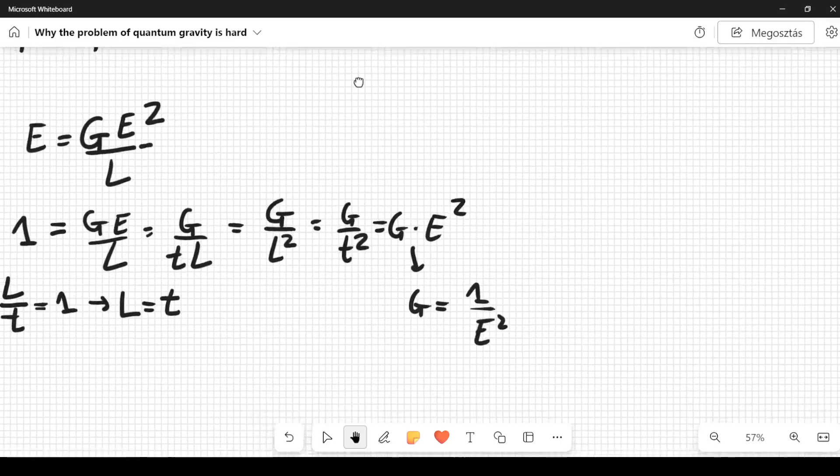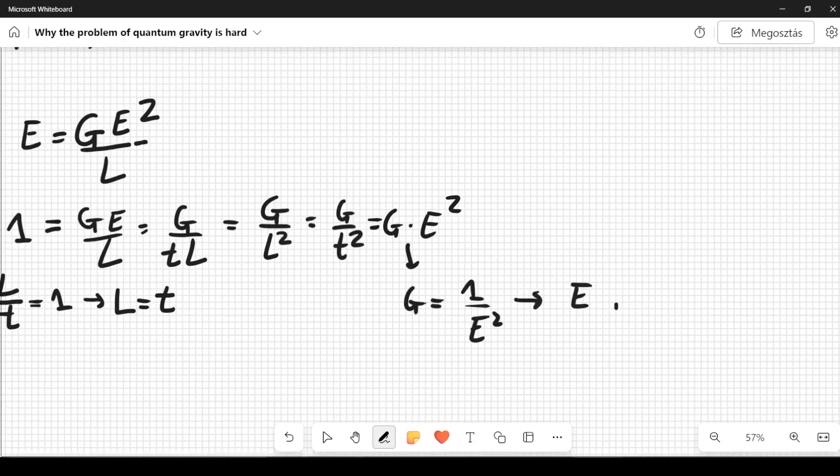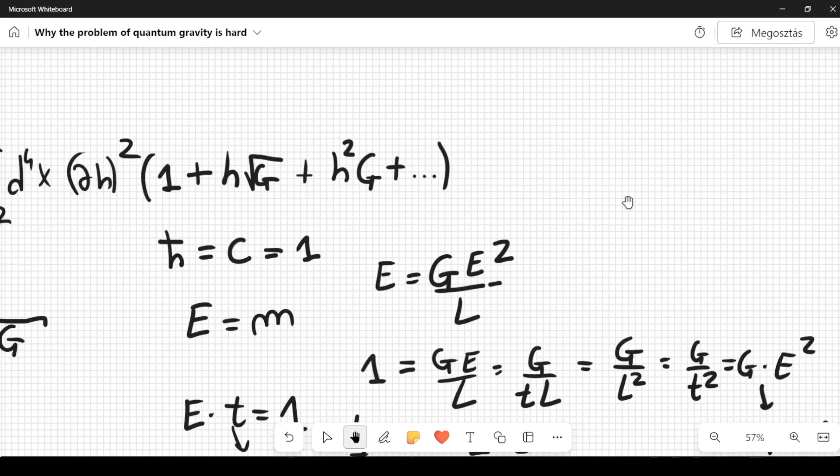so it's 1 over energy squared, and if you consider the value of G, even in this natural unit system, this constant is small, therefore this ratio here should also be small, which means that this E must be very large, so this is the idea. And therefore here you can rewrite it as, so this G can be replaced by 1 over E², and this square root of G can be replaced by 1 over E.